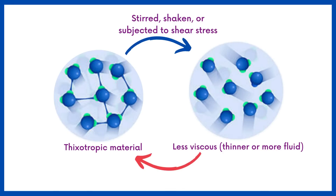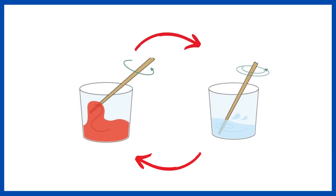They return to their original, more viscous state when the stress is removed and they are left undisturbed. Thixotropy is a reversible process, meaning the material can repeatedly transition between its more fluid and more viscous states, depending on the presence or absence of stress.